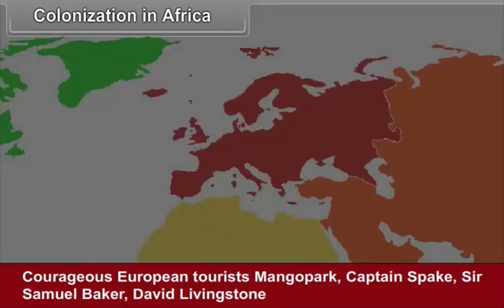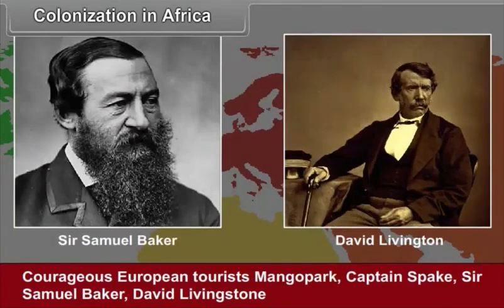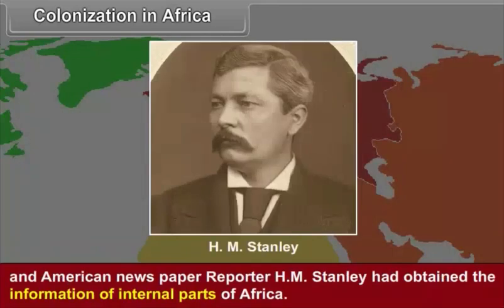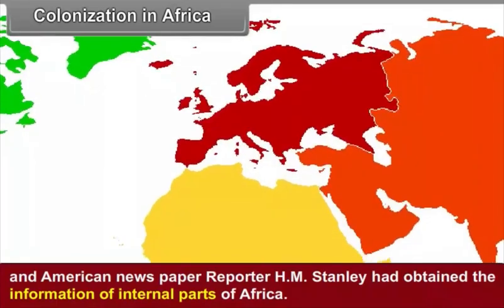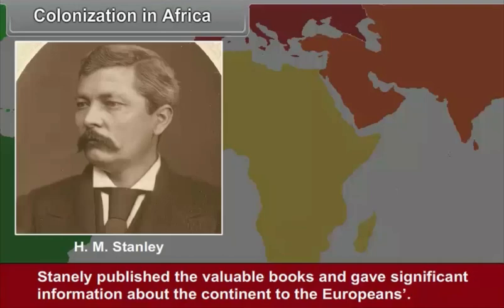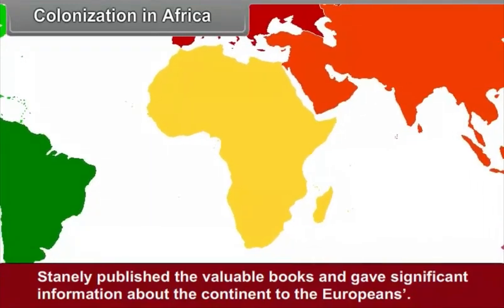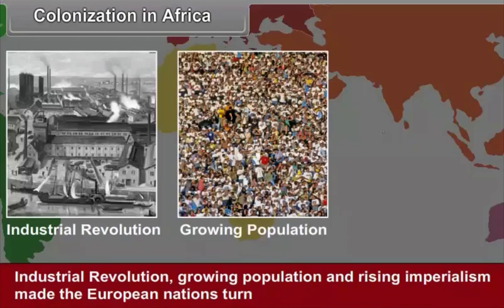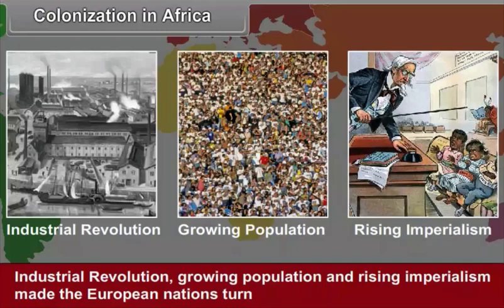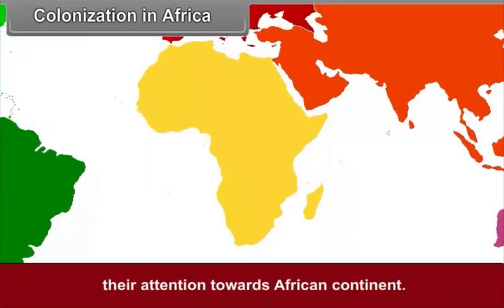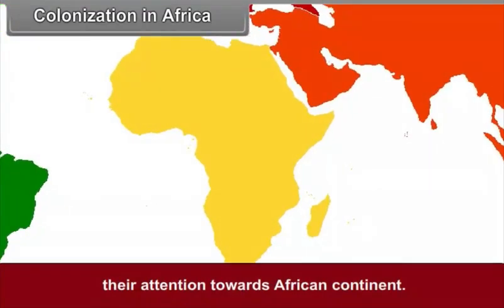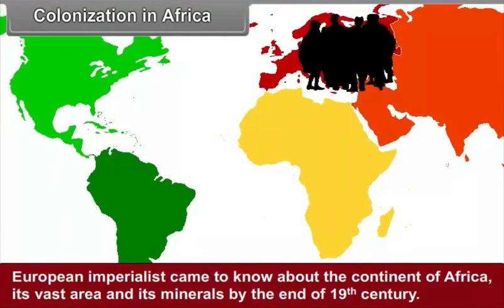Colonization in Africa: Courageous European explorers Mungo Park, Captain Speke, Sir Samuel Baker, David Livingstone and American newspaper reporter H.M. Stanley had obtained information about the internal parts of Africa. Stanley published valuable books and gave significant information about the continent to the Europeans. The Industrial Revolution, growing population and rising imperialism made European nations turn their attention towards the African continent. European imperialists came to know about the continent of Africa, its vast area and its minerals by the end of the 19th century.